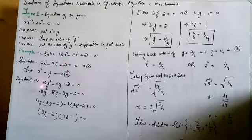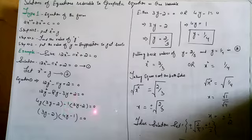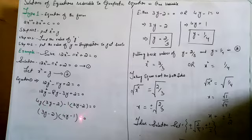Now we will factorize it using mid-term breaking: 12y² - 8y - 3y + 2 = 0. Taking 4y common from the first two terms: 4y(3y - 2), and taking -1 common from the third and fourth terms: -1(3y - 2) = 0. Writing the common factor (3y - 2) and the non-common factor: (3y - 2)(4y - 1) = 0.